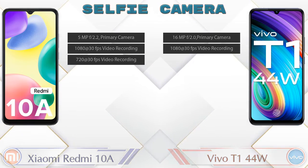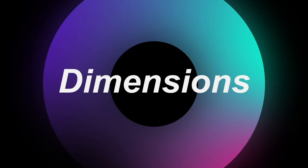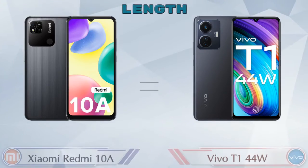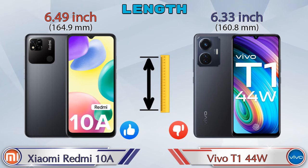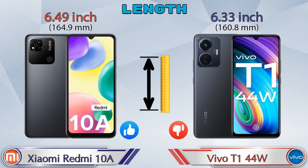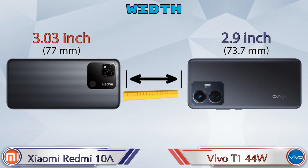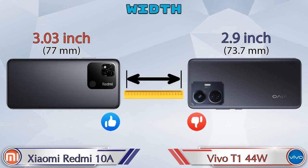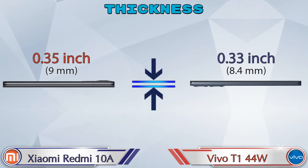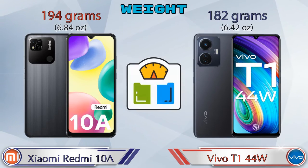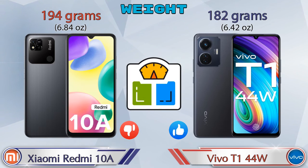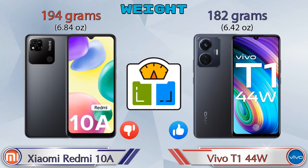Now let's check the details about dimensions. Length: Redmi 10A is 6.49 inches and the T1 44W is 6.33 inches. Width: Redmi 10A is 3.03 inches and the T1 44W is 2.9 inches. Thickness: Redmi 10A is 0.35 inches and the T1 44W is 0.33 inches. Weight: Redmi 10A is 194 grams and the T1 44W is 182 grams.